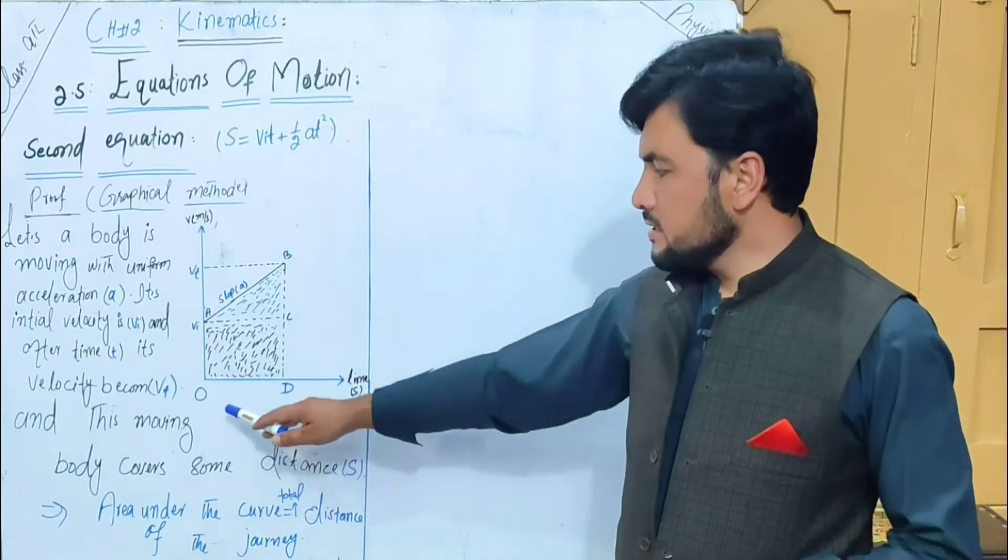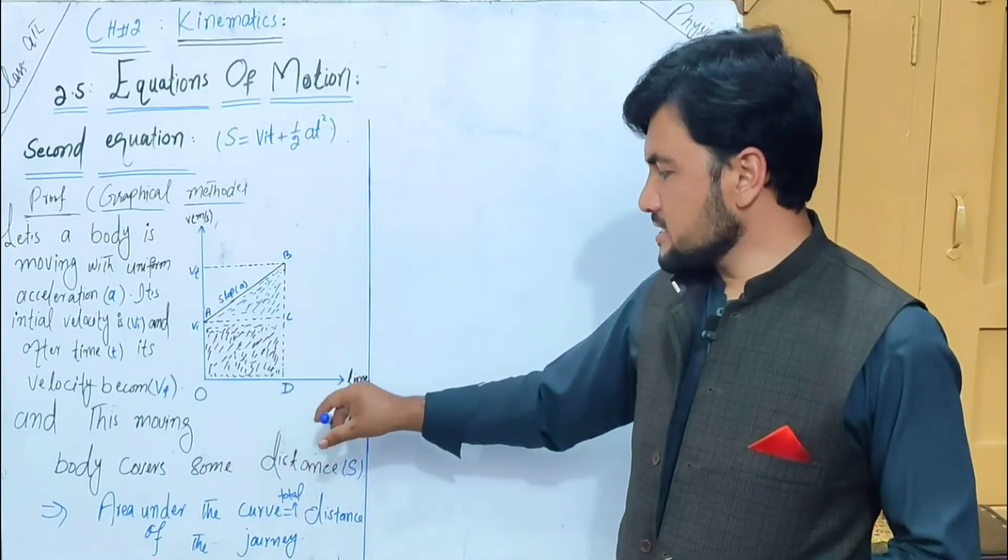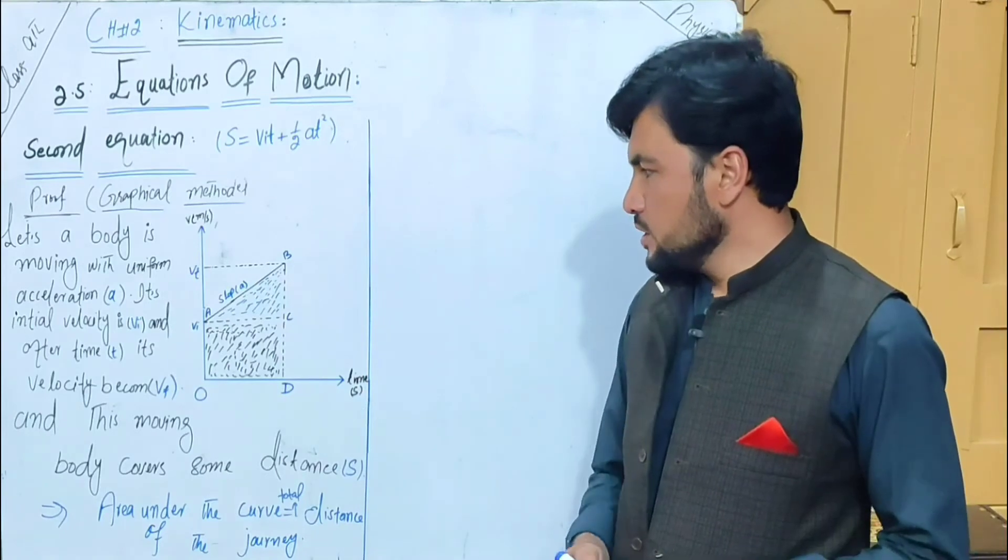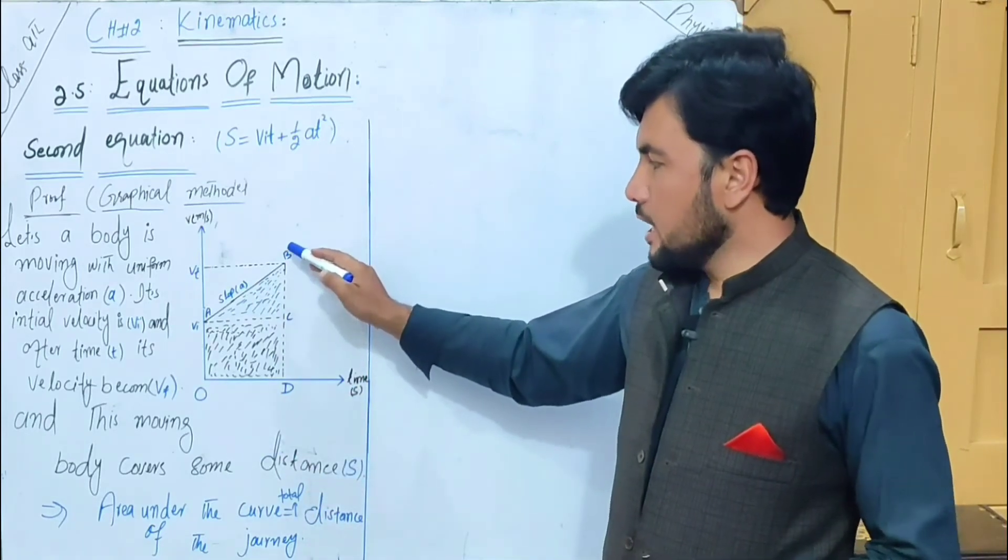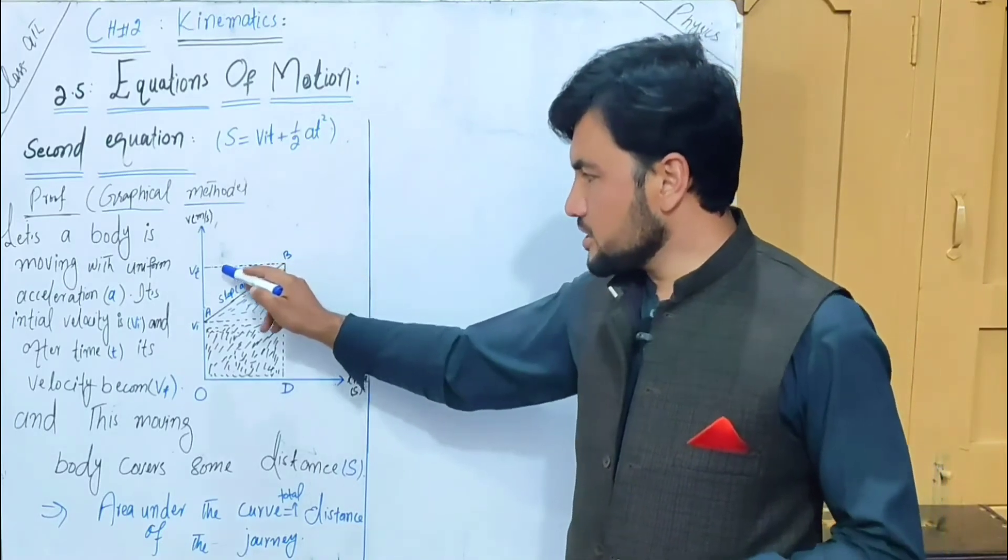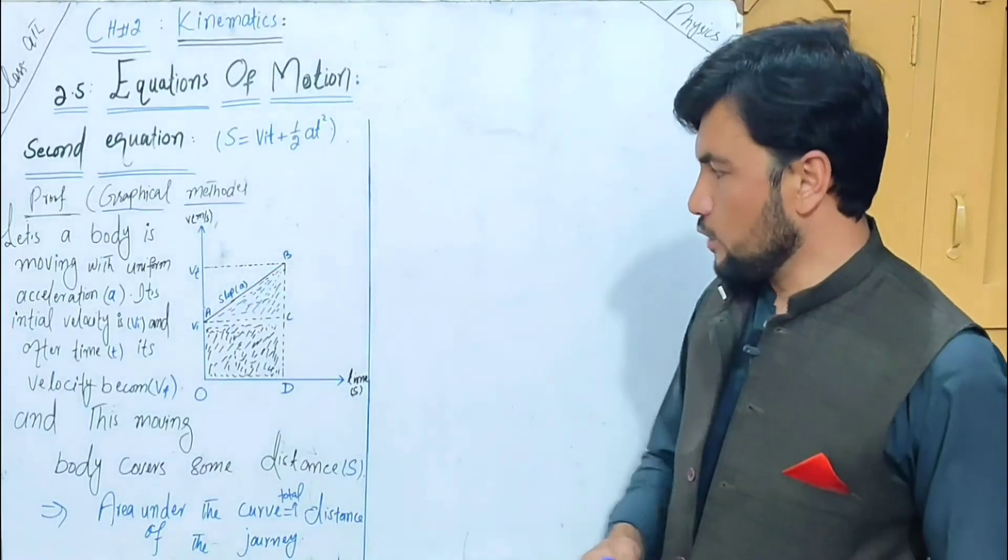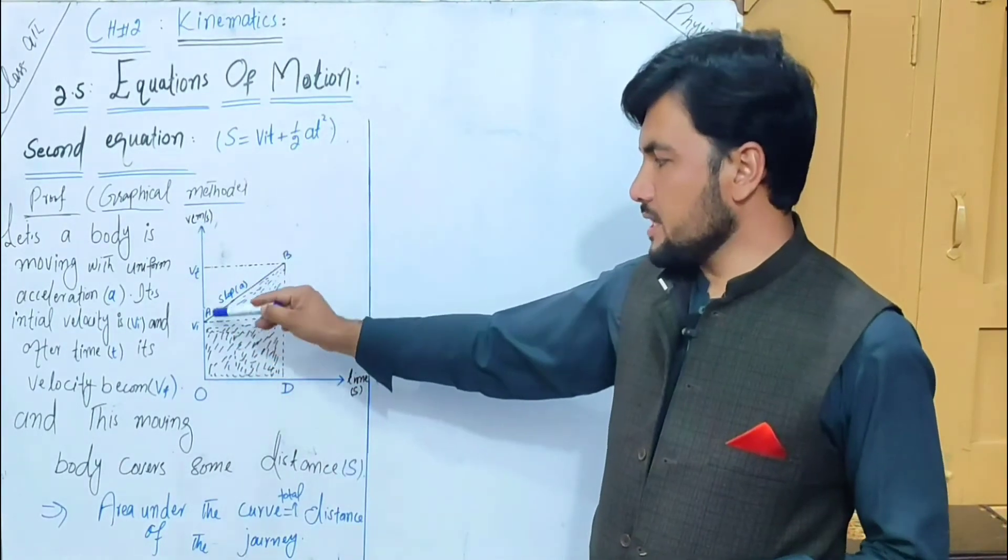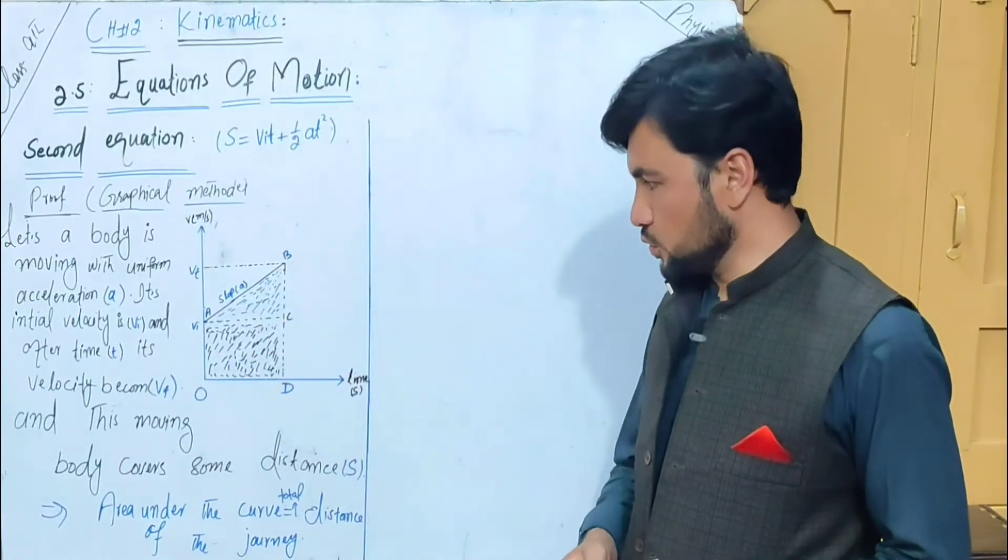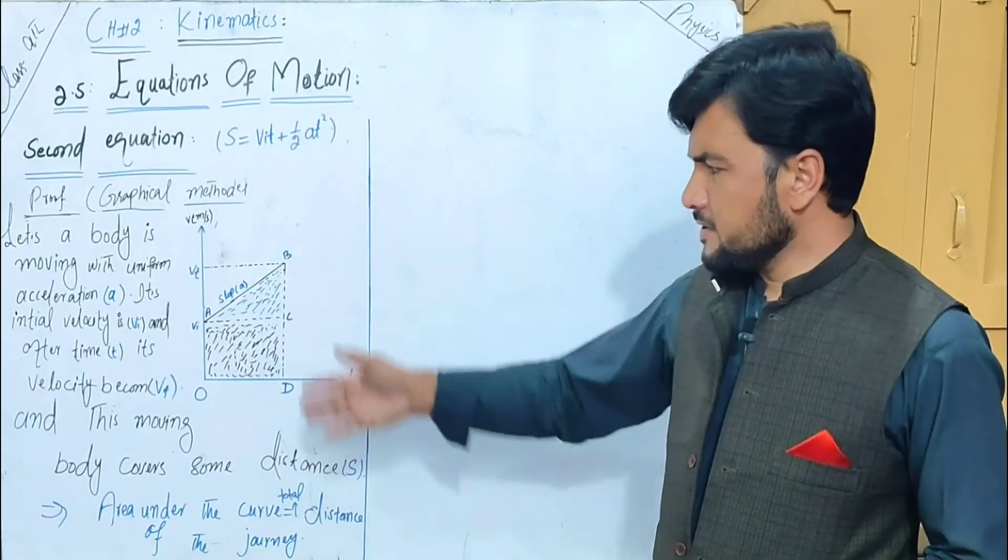After passage of time, time t is covered. Now the object reaches point B. At point B the object's velocity is v_f. The slope of the speed-time graph shows the acceleration.